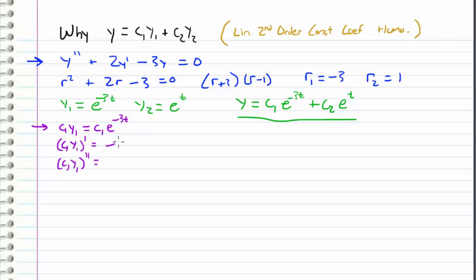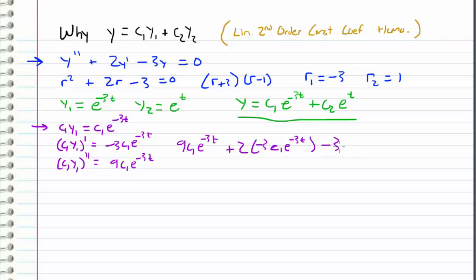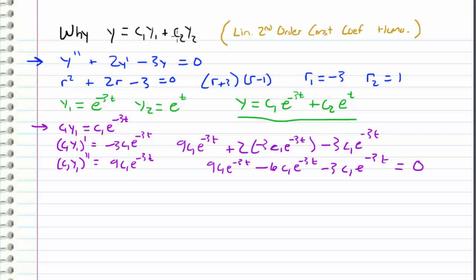c1·y1 prime comes out to be negative 3 times c1 e to the negative 3t. Then c1·y1 double prime gives us 9 times c1 e to the negative 3t. Plugging back into the differential equation: 9c1·e^(−3t) plus 2 times (−3c1·e^(−3t)) minus 3 times (c1·e^(−3t)). Simplifying: 9c1·e^(−3t) minus 6c1·e^(−3t) minus 3c1·e^(−3t), which all cancels out to zero. Since it equals zero, that does satisfy the differential equation. Any combination c1·y1 is a solution.